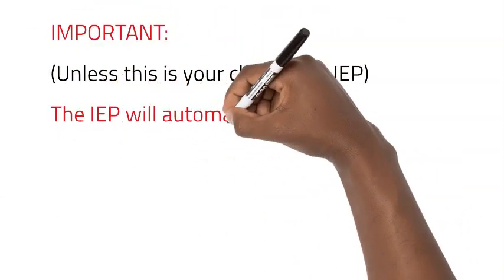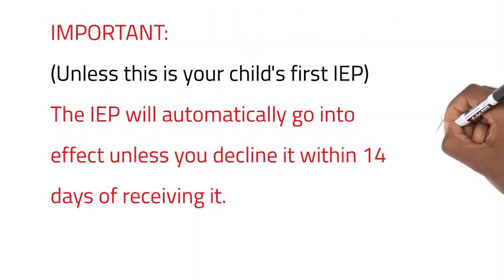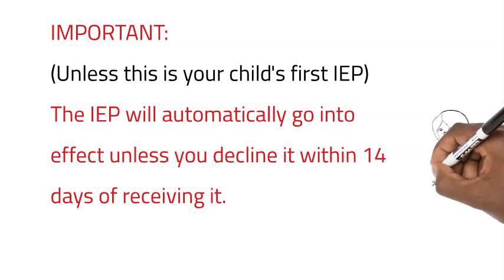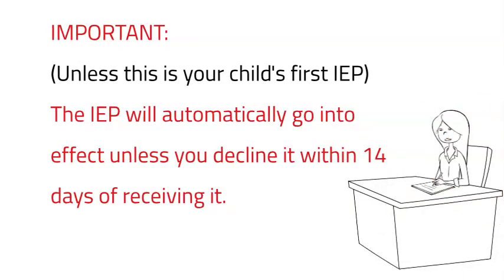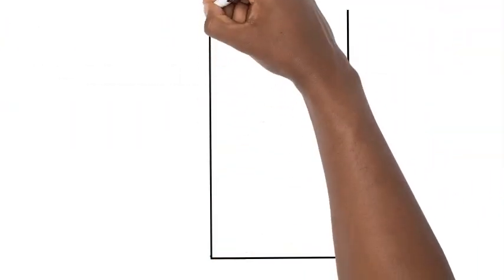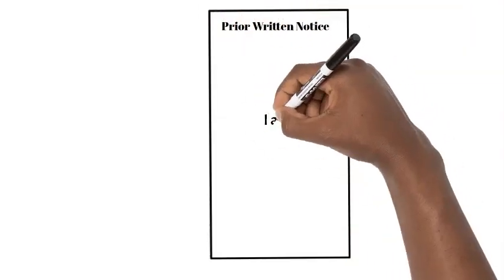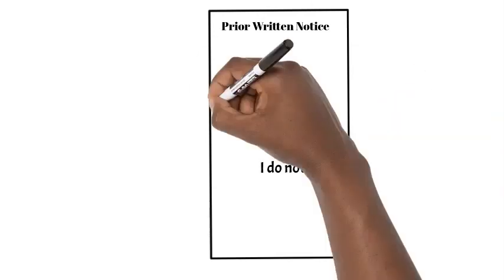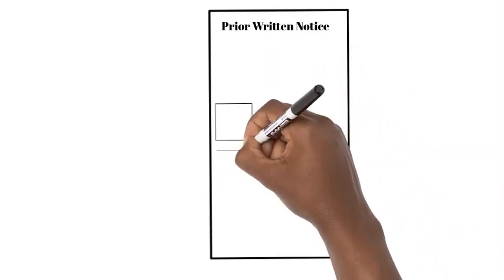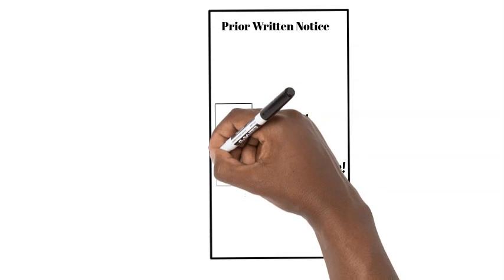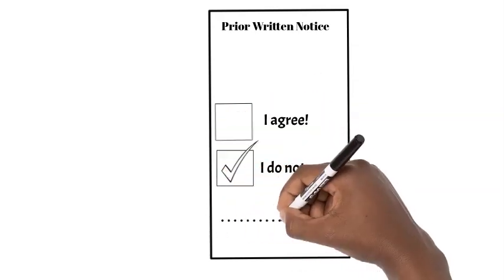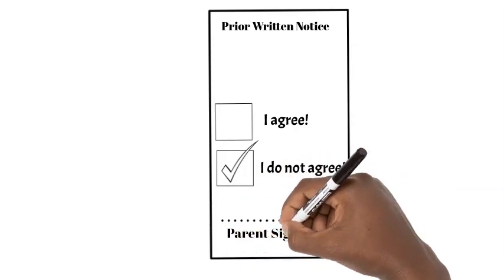It is, however, important to note that if this is not your child's first IEP, the IEP will automatically go into effect unless you decline it within 14 days of receiving it. Parents need to proactively decline or reject changes to an IEP by checking the box marked decline or object on the prior written notice form, which we'll describe in more detail in a later video. This must be done in writing, otherwise the IEP will go into effect.